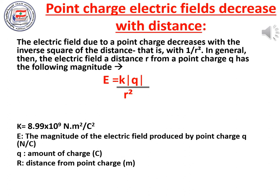The electric field due to a point charge decreases with the inverse square of the distance (1/r²). The electric field at a distance r from a point charge Q has magnitude E = K|Q| / r², where K is Coulomb's constant equal to 8.99 × 10⁹ N·m²/C². E is in newtons per coulomb, Q is the charge in coulombs, and r is the distance in meters. As the distance increases, the magnitude of the electric field decreases.